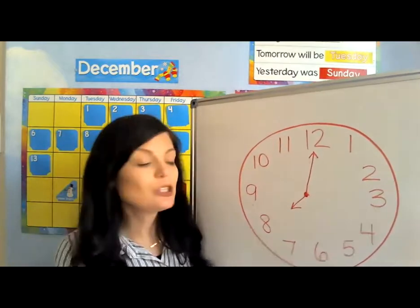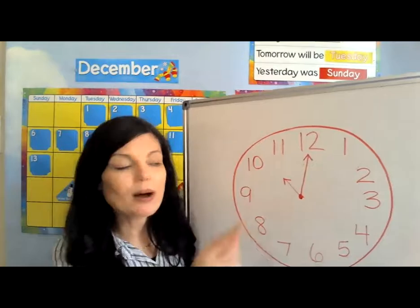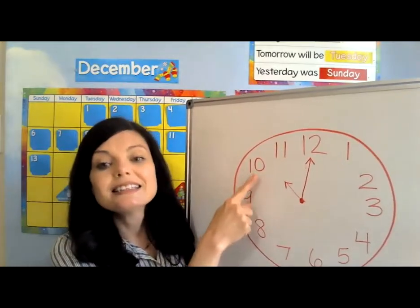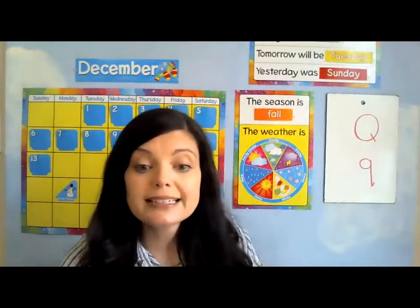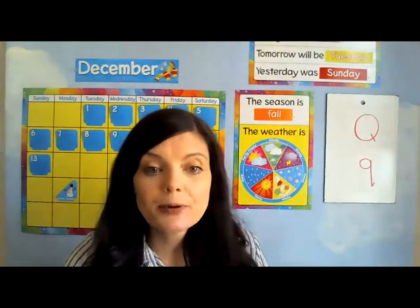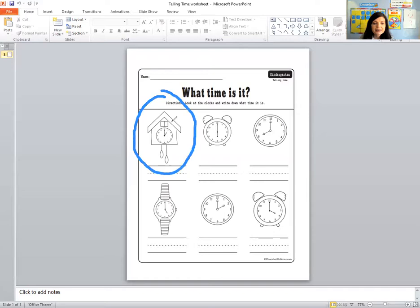Good job. Let's do one more — let's make it point to the 10. So what time is it? It's 10 o'clock. I have a worksheet I'd like for us to do together. The numbers are a little bit small, so maybe you'd like to pause and get the sheet printed out for yourself, but we can do it together. The first one: the little hand is pointing to the 1. So what time is it? It's 1 o'clock. Good job.